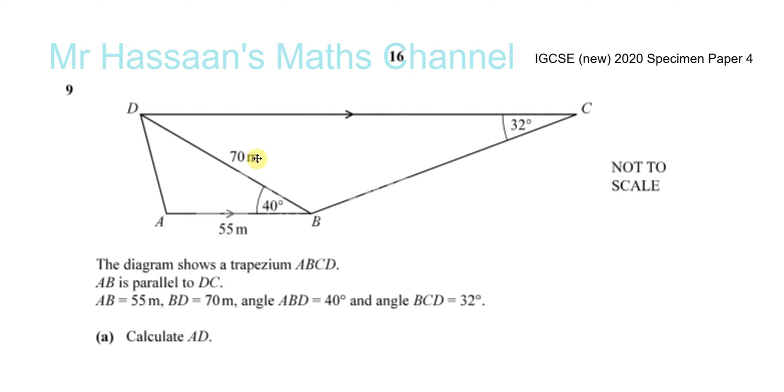Welcome back. I'm now answering question number nine from the specimen paper, paper four for the new 2020 syllabus. It's a question about trigonometry. The diagram shows a trapezium ABCD. AB is parallel to DC, that's what these arrows there are for. AB is 55, BD is 70, ABD is 40 degrees and the angle BCD is 32 degrees.